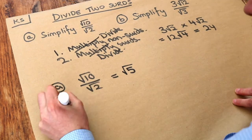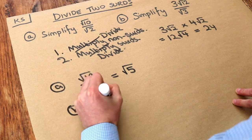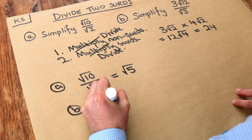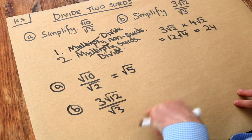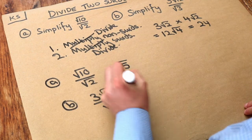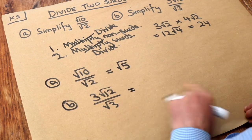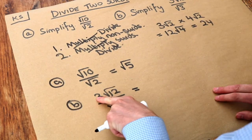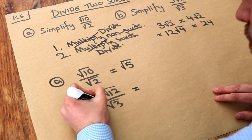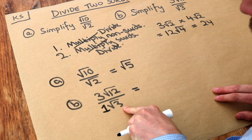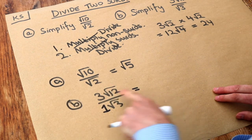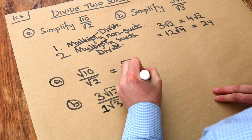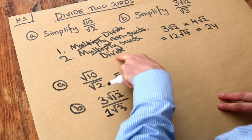For the second example we have 3√12 over √3. You could first simplify √12 then cancel after that, but it's easier to first just divide the surds. So what do we first do? We divide the non-surds. The only non-surd here is 3 — we could put a 1 here if you like, because 1√3 just means √3. So dividing those non-surds: 3 divided by 1 is 3.